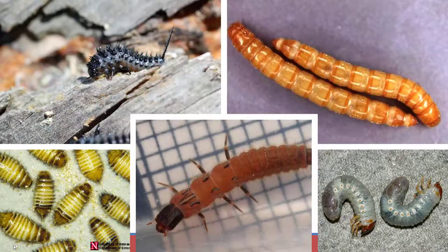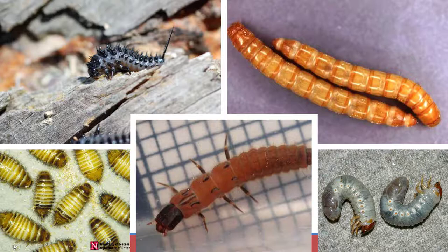Even beetle larvae are very diverse. The ladybug larva at the top right is very mobile, an active hunter. The mealworm is used to feed tarantulas, lizards, and chickens — it looks like it doesn't have legs and is rather nondescript. The c-shaped grubs at the bottom right have a hardened head capsule and three little legs — 'grub' just means it's a baby beetle, not necessarily a pest. There are also aquatic beetle larvae and some with lots of hairs on their body.